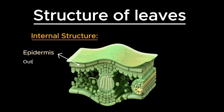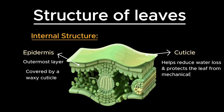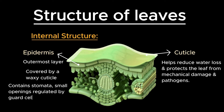The outermost layer of the leaf is the epidermis, which is covered by a waxy cuticle. This cuticle helps reduce water loss and protects the leaf from mechanical damage and pathogens. The epidermis also contains stomata, small openings regulated by guard cells, which control gas exchange and transpiration.